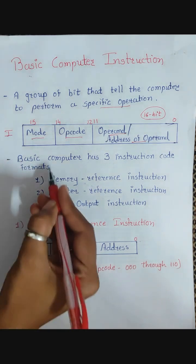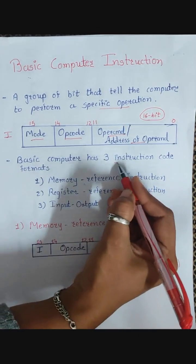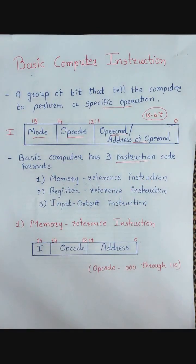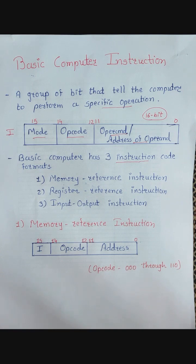A basic computer has 3 instruction code formats. The first one is memory reference instruction, the second one is register reference instruction, and the third one is input-output instruction. In a memory reference instruction, the operand makes a reference to a memory variable or location — that is why it is known as a memory reference instruction.